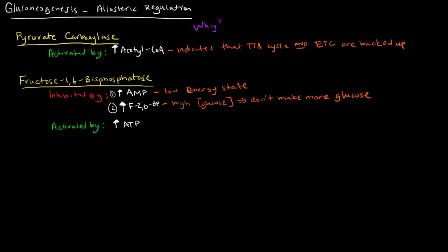Now, fructose-1,6-bisphosphatase does have an activator, an allosteric activator, and that's high levels of ATP. And of course, this indicates a high energy state. So if we have a lot of energy around, let's just go ahead and store energy. So we would activate gluconeogenesis by activating fructose-1,6-bisphosphatase.